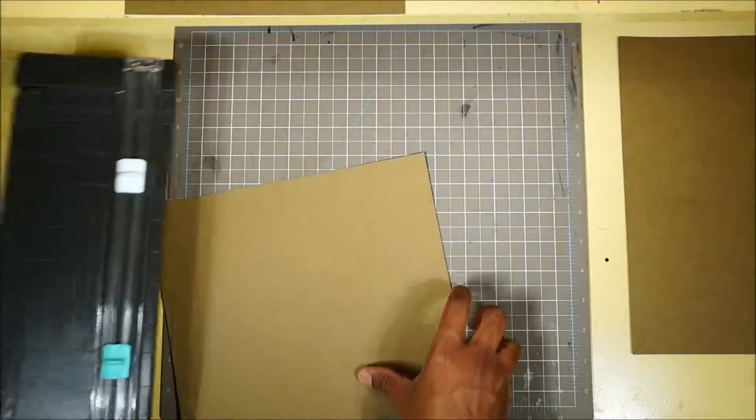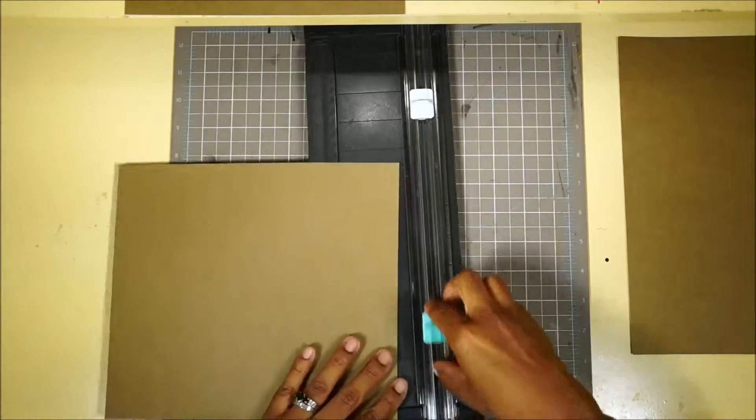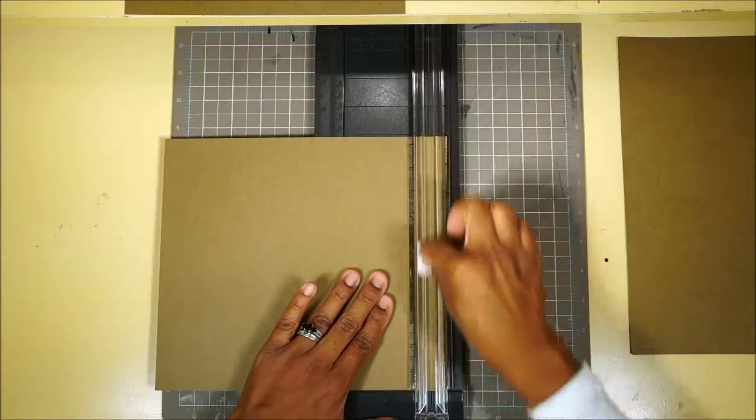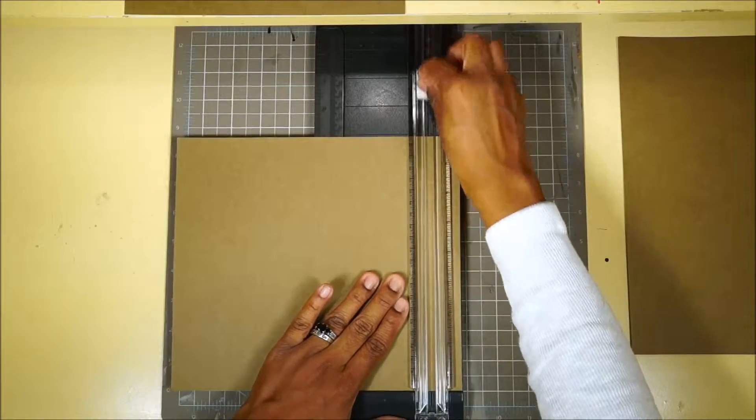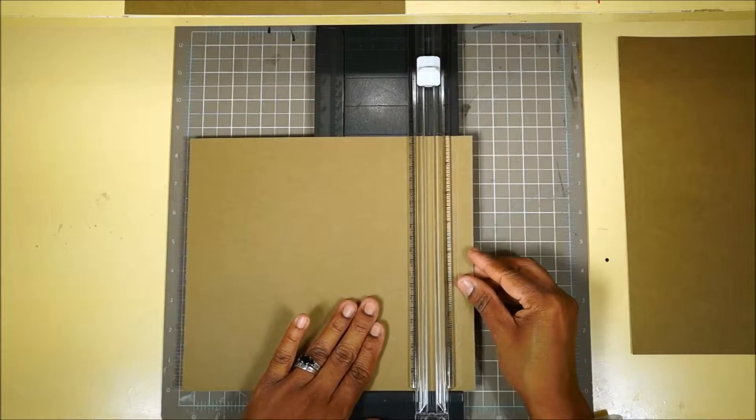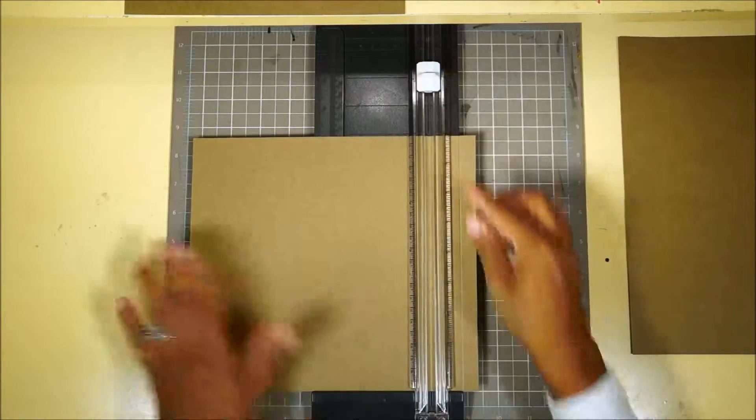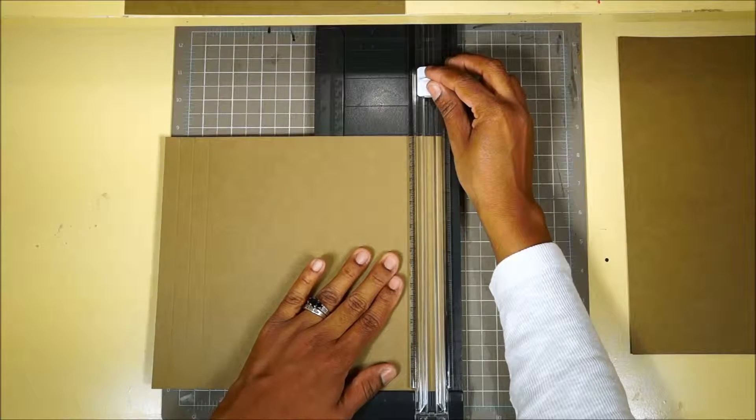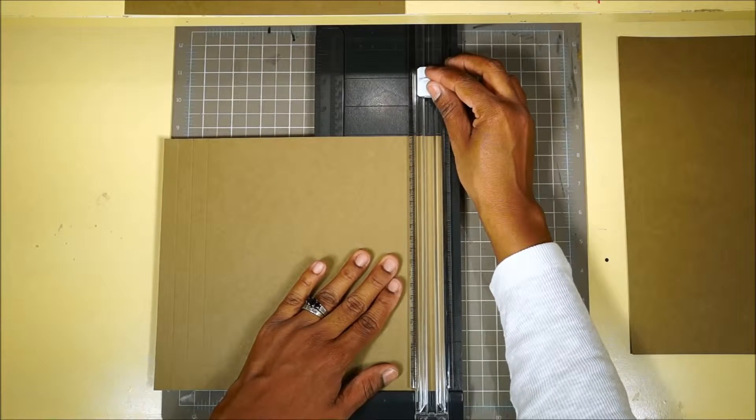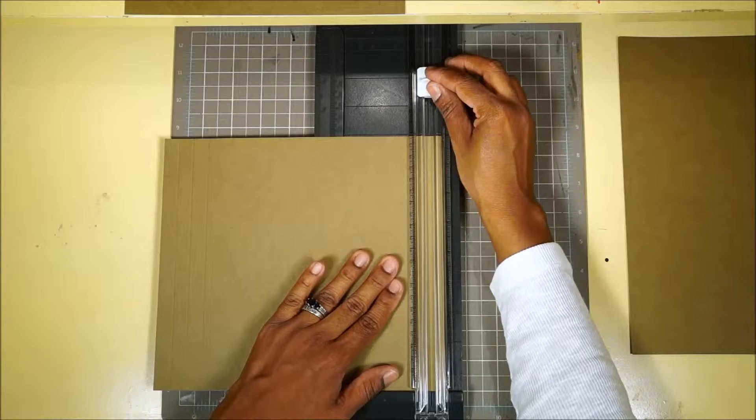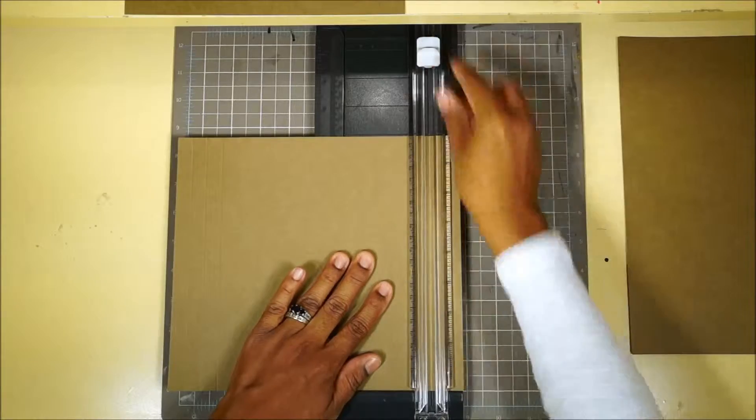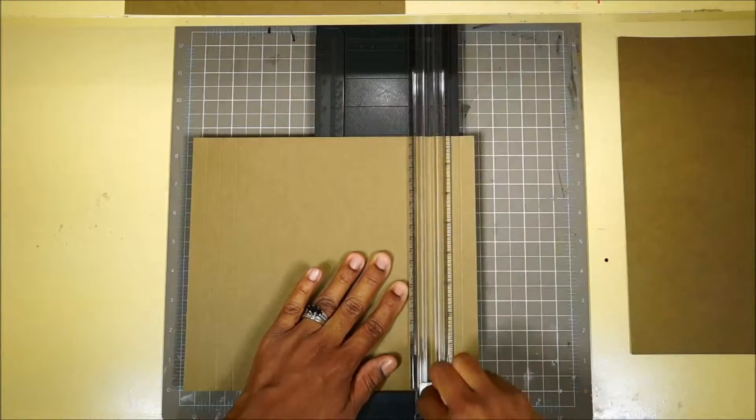And then, we're going to score. Oh, sorry. That was noisy. We're going to score really quickly every half inch, three times on both sides. That's a half inch, an inch, one and a half inches. And then, we're going to just flip it over, do the same thing on the other side. And this is going to be the front piece of our pocket. One, two, three.